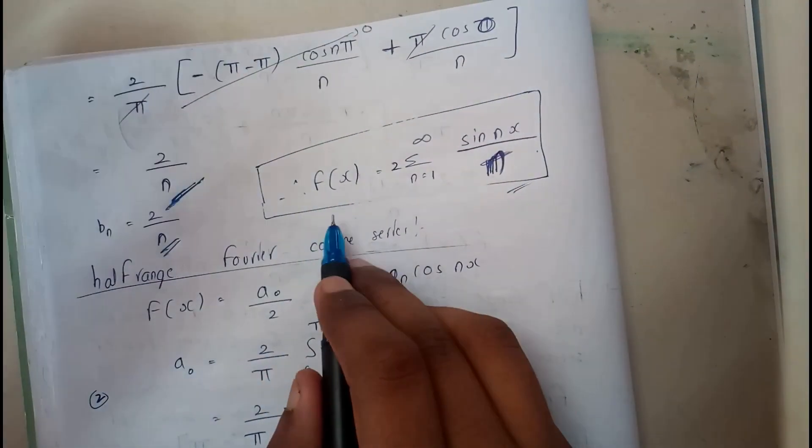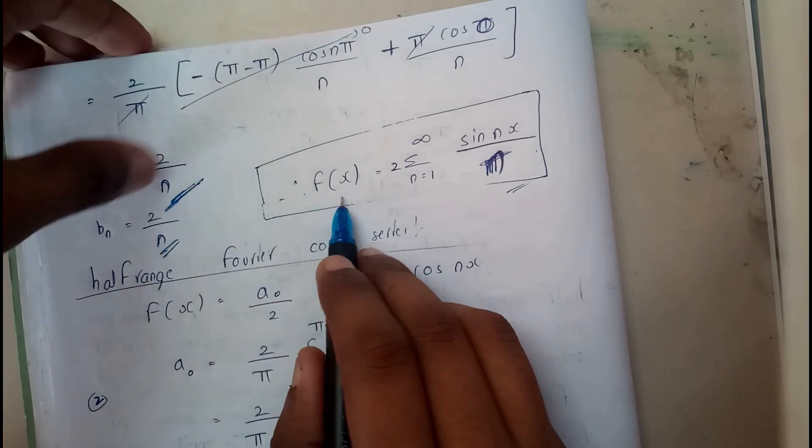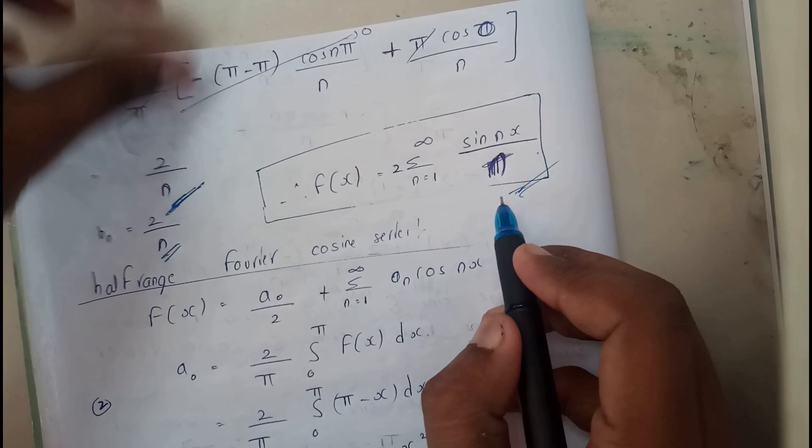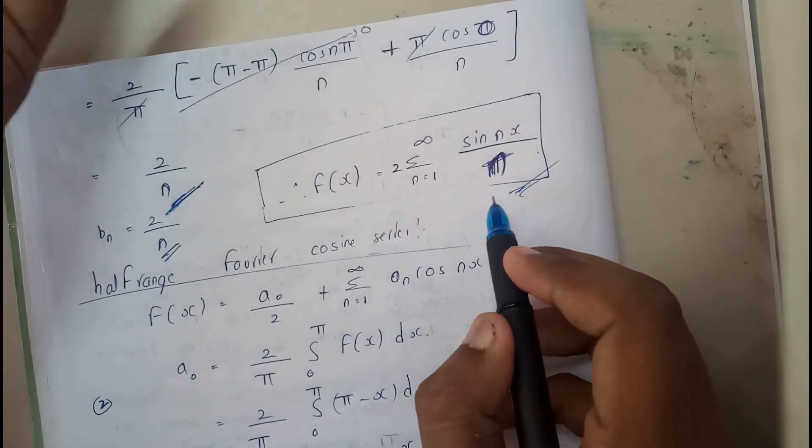So our half range sine series is f(x) = 2Σ(n=1 to ∞) sin(nx)/n. This is our half range sine series.